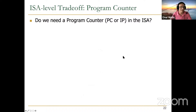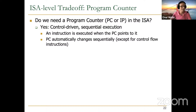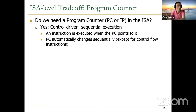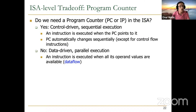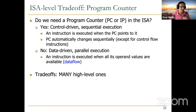The high-level trade-off is: do we need a program counter in the ISA? If yes, you get control-driven sequential execution like von Neumann — an instruction executes when the PC points to it, and the PC changes sequentially. By nature you're restricting parallelism at the model level. If no, one potential way is data-driven parallel execution: instructions execute when all operand values are available — that's the data flow notion. This leads to many high-level trade-offs: ease of programming, ease of compilation, performance, and hardware complexity.